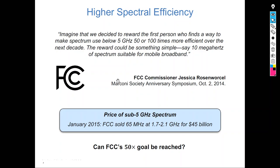This sentence is quoted by FCC commissioner Jessica Rosenworcel in 2014. She said: 'Imagine that we decided to reward the first person who finds a way to make spectrum use below 5 GHz 50 or 100 times more efficient over the next decade. The reward could be something simple — say, 10 MHz of spectrum suitable for mobile broadband.' She is basically saying: let's think of a solution that can improve spectral efficiency 50 or 100 times.